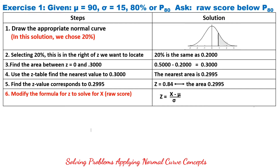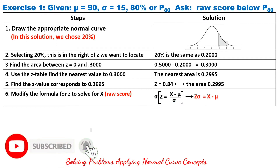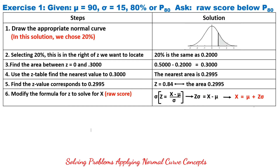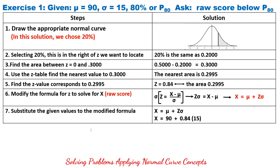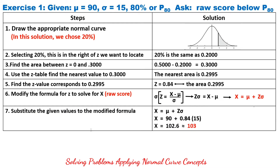To solve for X or the raw score, modify the formula. Multiply both sides by the standard deviation (sigma), so the standard deviation cancels, giving Z·sigma equals X minus mu. Transposing mu, the formula for raw score is X equals mu plus Z·sigma. Substituting the given values: X equals 90 plus 0.84 times 15, which equals 102.6, rounded off to 103.